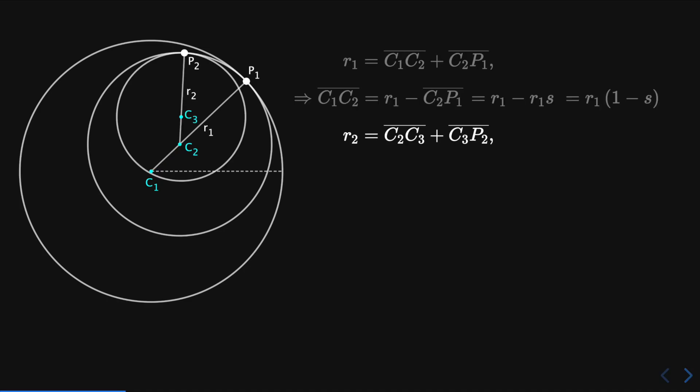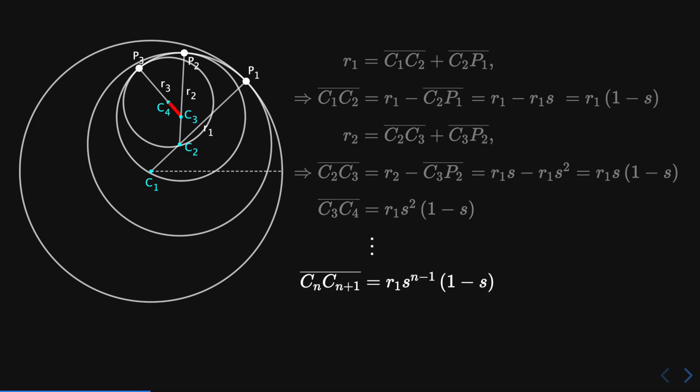Next, since r2 is equal to this expression, then c2 c3 is equal to r2 minus c3 p2, which is equal to r1 times s minus r1 times s squared, and factoring, we obtain r1 times s times 1 minus s. c3 c4 is obtained in a similar way, which leads us to the general case cn cn plus 1 equal to r1 times s to the power of n minus 1 times 1 minus s. Again, s is greater than 0 and less than 1.